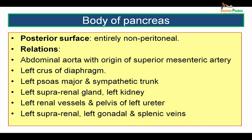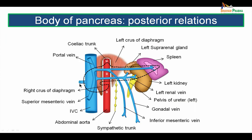The posterior surface of the body of pancreas is entirely non-peritoneal. It is related to the abdominal aorta with the origin of the superior mesenteric artery, the left crus of diaphragm, the left psoas major muscle and sympathetic trunk, the left suprarenal gland, left kidney, left renal vessels and pelvis of left ureter, and the left suprarenal, left gonadal, and splenic veins. The dotted outline of the pancreas on the picture shows the posterior surface related to all these structures and their associated veins — the left suprarenal vein, the left renal vein, and the left gonadal veins.